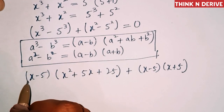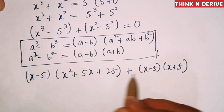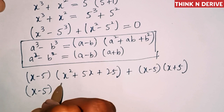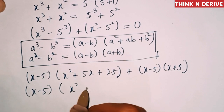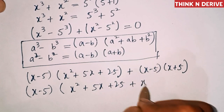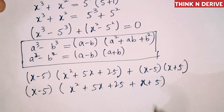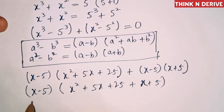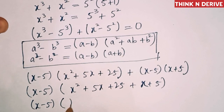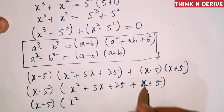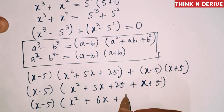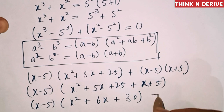Now we'll take (x - 5) common in these terms. So this equals (x - 5)(x² + 5x + 25 + x + 5) = 0. This simplifies to (x - 5)(x² + 6x + 30) = 0.